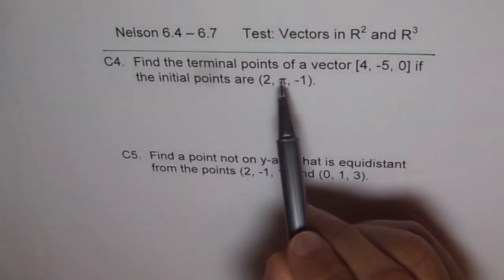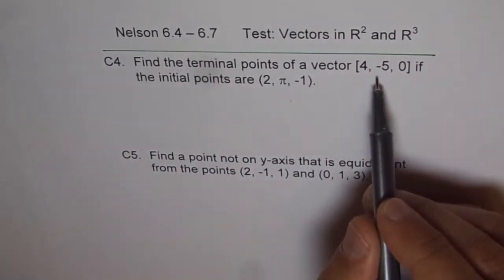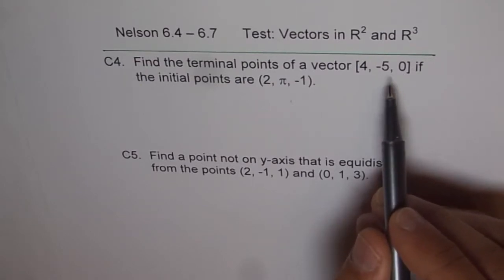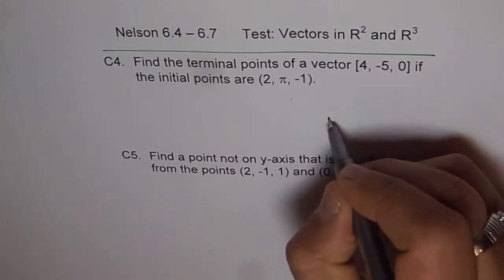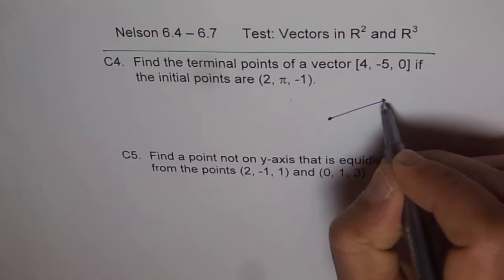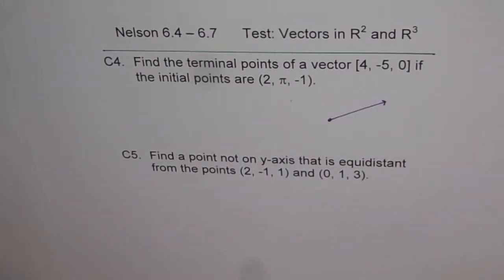Find the terminal points of a vector [4, -5, 0]. So that is a vector, correct? It is a vector from one point to the other. If the initial point is given to you,